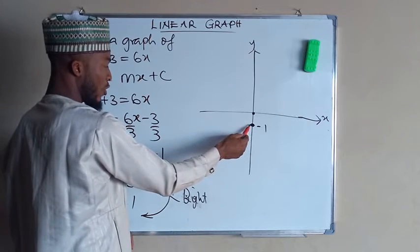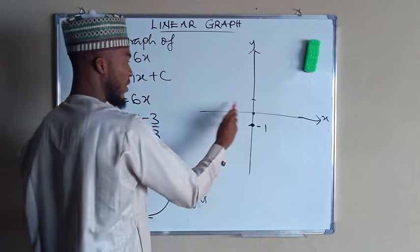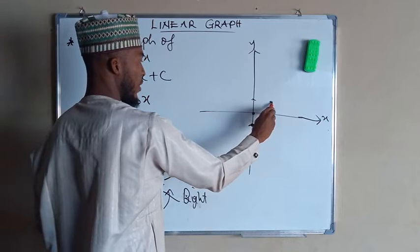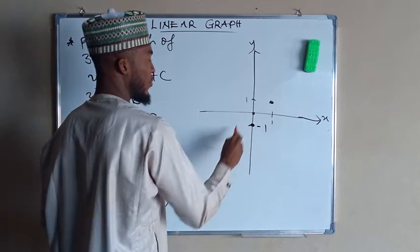So from here we go up twice: 1, 2. Then you go to the right 1. This is 1.